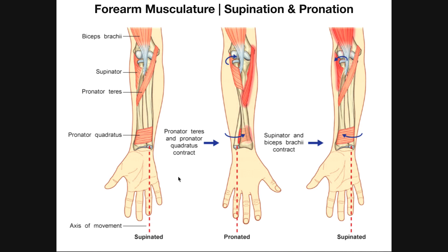When your hand is supinated, the bones in your forearm should look like this — the radius and the ulna lying parallel to each other. Now, rotate your hand so your palm is facing down. What you just did was pronation. You've just pronated your hand.